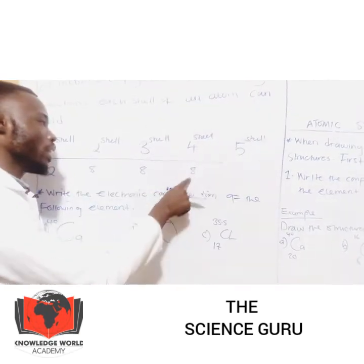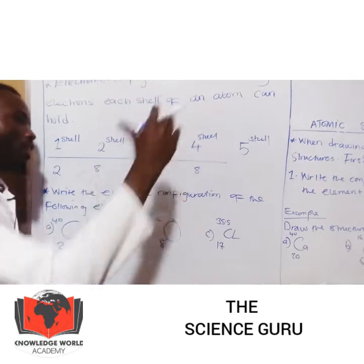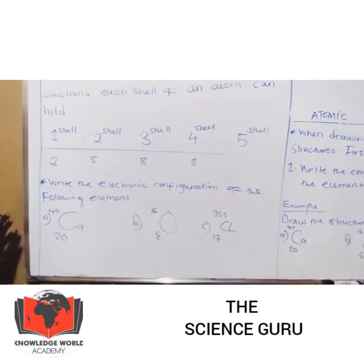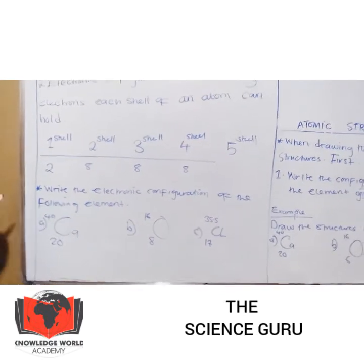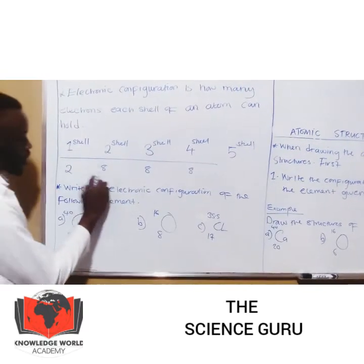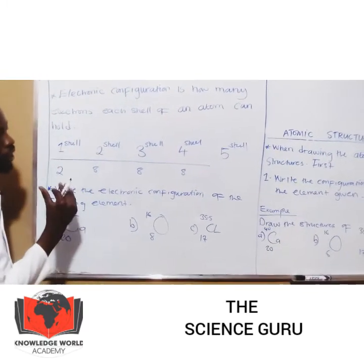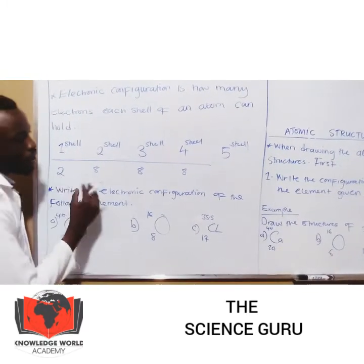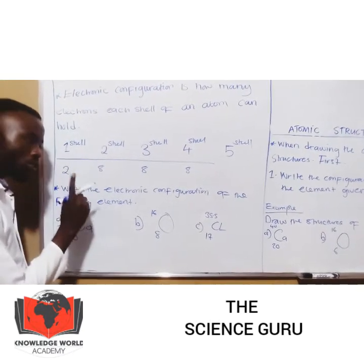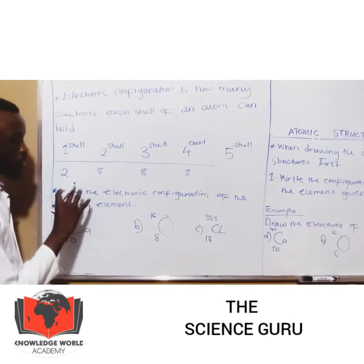Fourth shell, eight. Fifth shell, eight. Six, eight. Seven, eight. Just like that. Now, I want you to take note of this: these electrons are dependent on the number of electrons that that atom has.